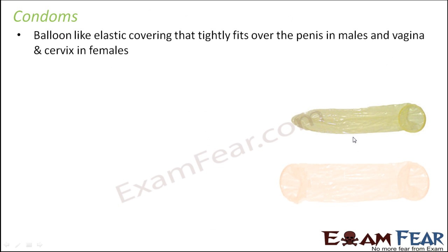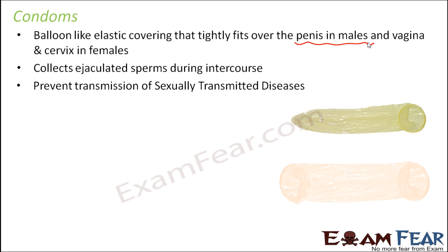Condoms are balloon-like elastic coverings that tightly fit over the penis in males and over the vagina and cervix in females. In males, the secretion comes out of the penis, so if you want to collect the secretion, you have to put something as a covering of the penis. In females, the secretion from the male comes into their vaginal space, and once it enters through the cervix inside, it will be able to reach the fallopian tube. So there has to be something which blocks its entry after the cervix. This is the male condom and this is how the female condom looks like. They collect ejaculated sperms during intercourse.